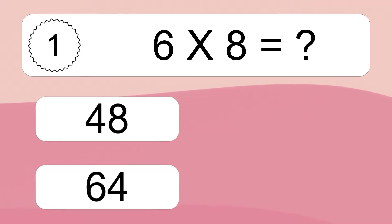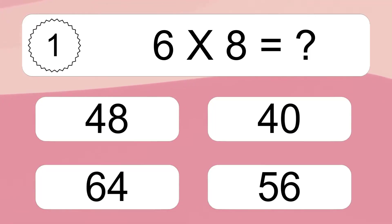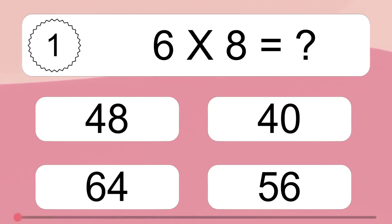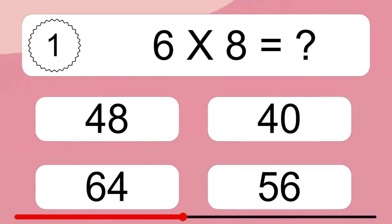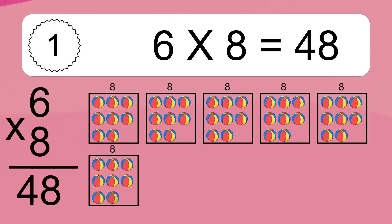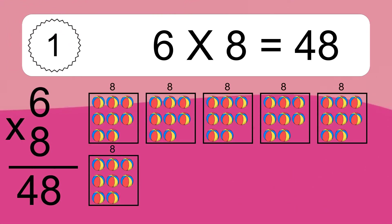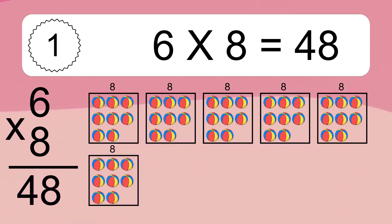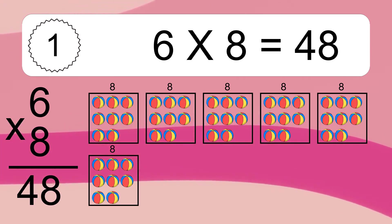Six times eight equals what? Six times eight equals 48. We have six boxes, and each box has eight colorful balls inside. If you count all the balls in all the boxes together, you will have six times eight balls. This equals 48 balls.